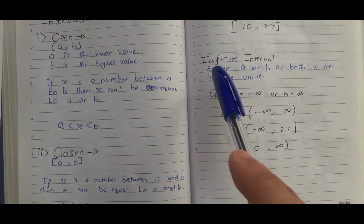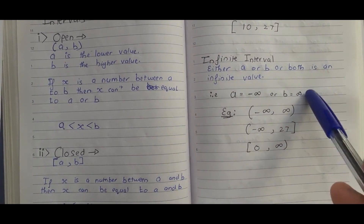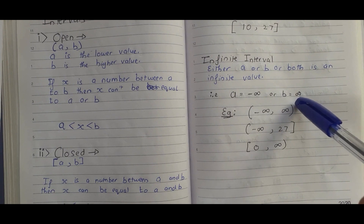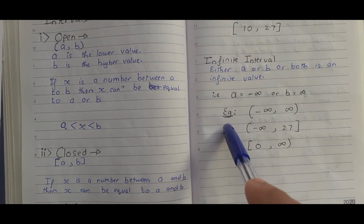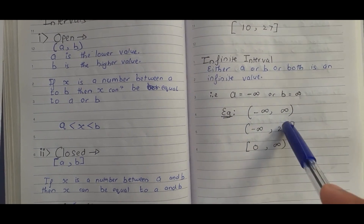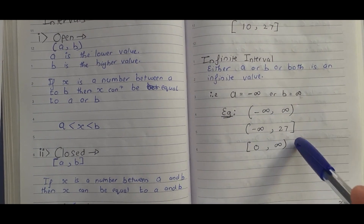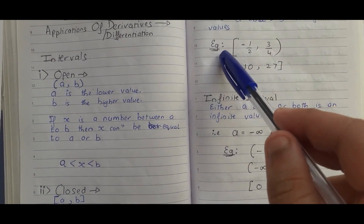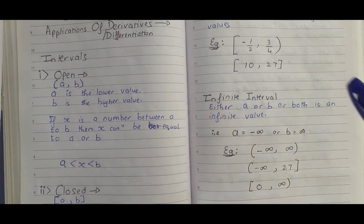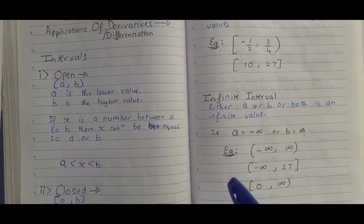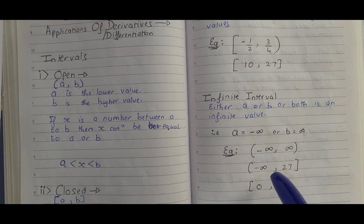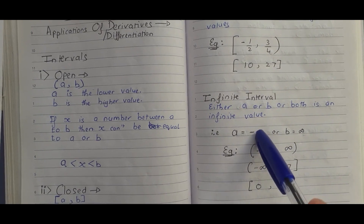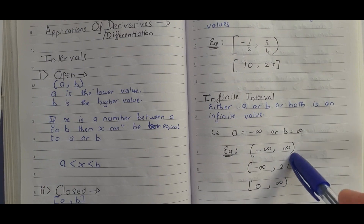Here you have the infinite interval, where either A, B, or both is an infinite value. Since A is the lower value, A is negative infinity; since B is the higher value, B is positive infinity. Examples include negative infinity to infinity, negative infinity to 27, and 0 to infinity. As a callback: a finite interval can have an open or closed interval, but an infinite value will always have an open interval, since infinity does not have a properly defined value. Hence, infinity and negative infinity are both represented with open intervals only.